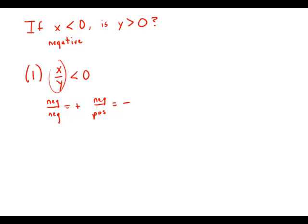So the only way that x divided by y can be negative is if y is positive. So this statement is sufficient. This allows us to answer the question, yes, y is positive. So now we have to put that aside.